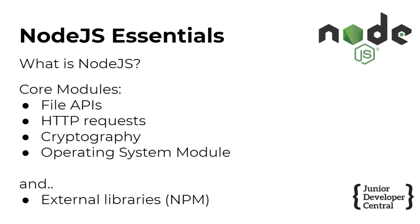In that core Node.js runtime you have modules that provide file APIs so that you can open, read, and write to files on your file system. There are modules that cover HTTP requests so you can send and receive data to external servers. There are modules on cryptography so you can create secure data when saving it into a database or file. And there is also an operating system module so you can find out more information about the system the Node.js program is running on.